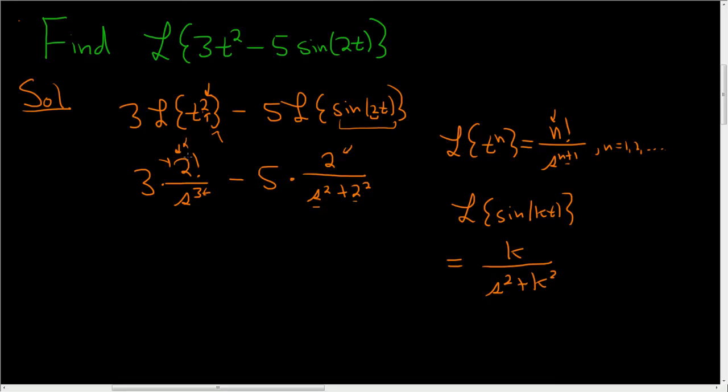Let's finish. 2 factorial is 2, so we get 6 over s cubed minus 10 over s squared plus 4. And that's it. That's the Laplace transform that we wanted. We'll see you next time.